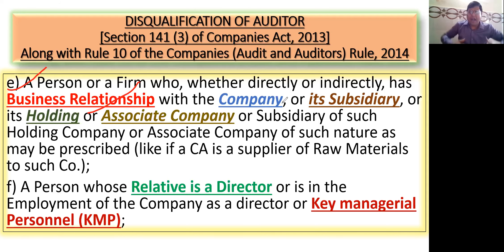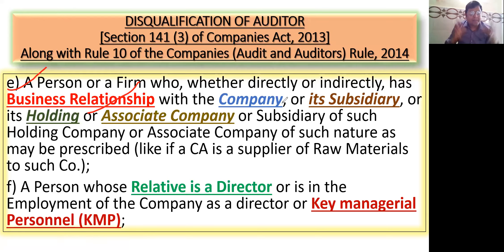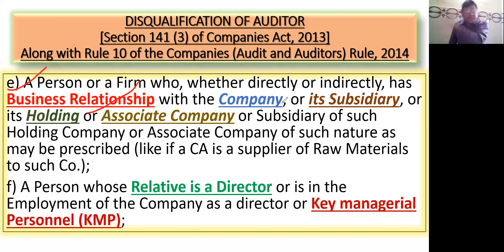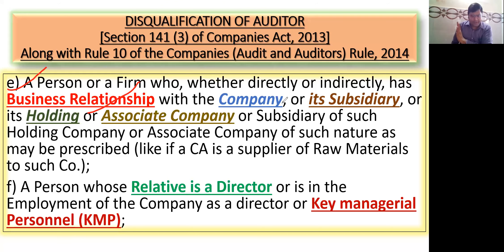Business relationship का मतलब — अगर मैं उस company को raw material supply कर रहा हूँ, इसका मतलब मेरा business relationship है, तो मैं उस company का auditor नहीं बन सकता, मैं disqualify हो जाऊंगा। चाहे उस company को कर रहा हूँ, या उसकी subsidiary, holding, associate या fellow subsidiary — तो अगर मेरा business relationship है, तो मैं उस company का auditor नहीं बन सकता। यही E clause बोलता है।